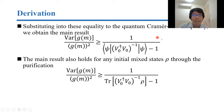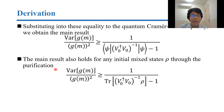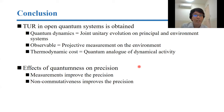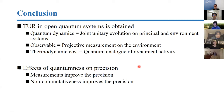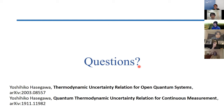The main result also holds for any initial mixed states through purification. In conclusion: TUR in open quantum systems is obtained using joint unitary evolution on principal and environment systems. The observable is a projective measurement on the environment of counting type. The thermodynamic cost is not entropy production but the quantum analog of dynamical activity. The effect of quantumness on precision is shown, and measurements can improve precision. Non-commutativeness between Hamiltonian and jump operators can also improve precision. Thank you very much.